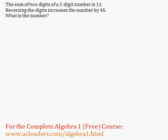The sum of two digits of a two-digit number is 11. So let's say that A plus B is 11, given that A is the tens digit and B is the units digit. So A plus B is 11. Reversing the digits increases the number by 45. What is the number?